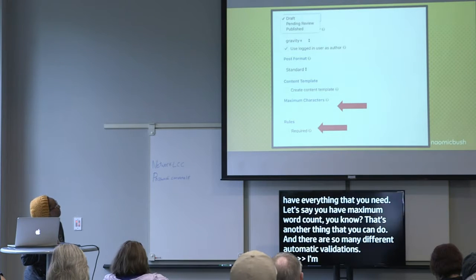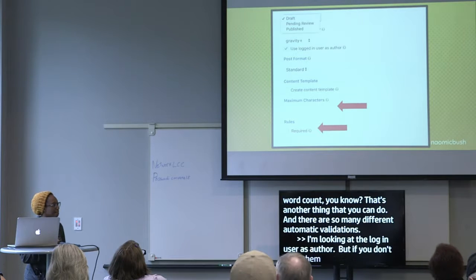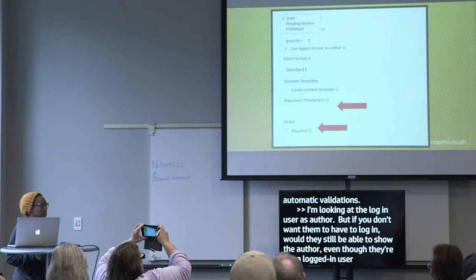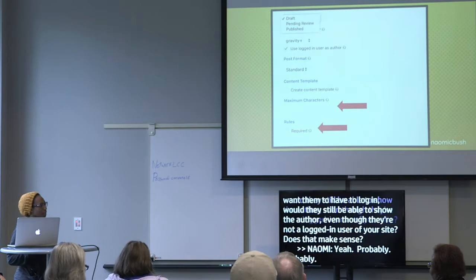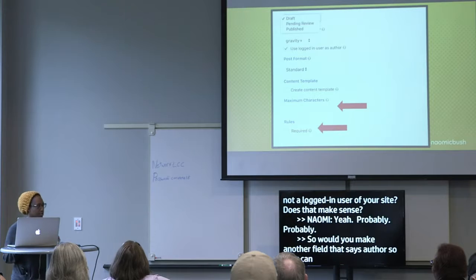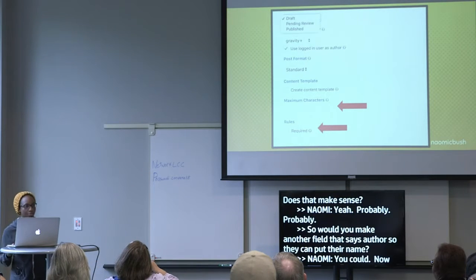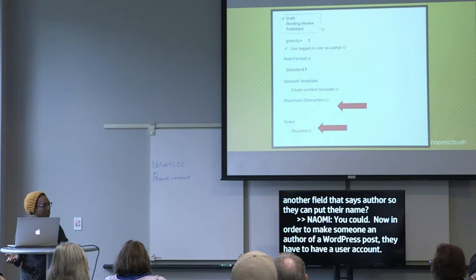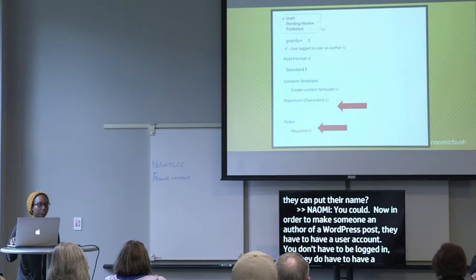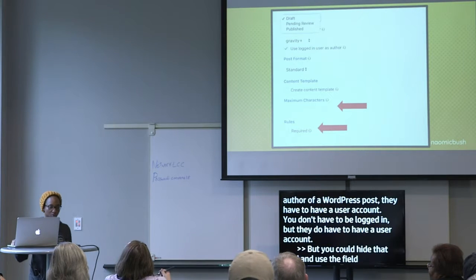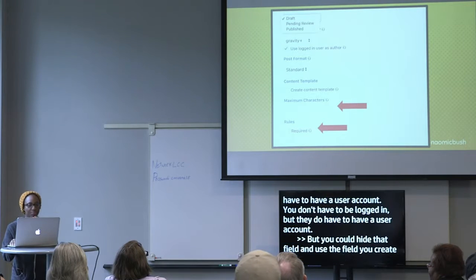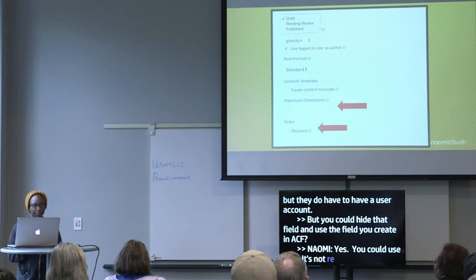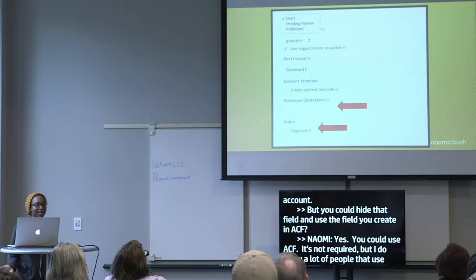If you have 'logged in user as author' but don't want them to log in, they'd still show as author. In order to make someone an author of a WordPress post, they have to have a user account in WordPress — though they don't have to be logged in. You could create a field for their name, hide that field, and use the field you create. You can also use ACF, but it's not required.